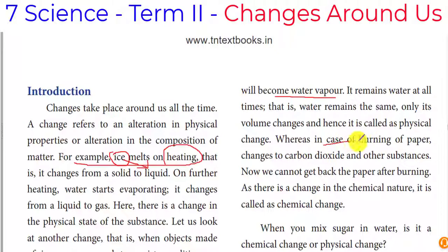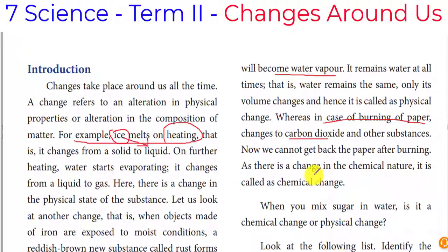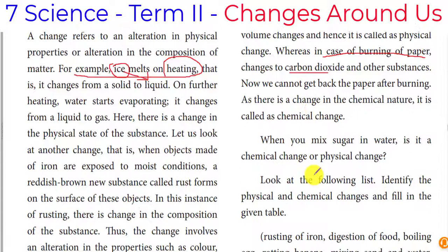In the case of paper, when it burns it produces carbon dioxide, and we get ash. This is called a chemical change.